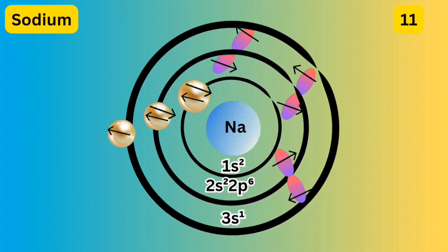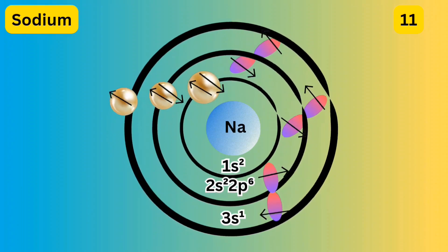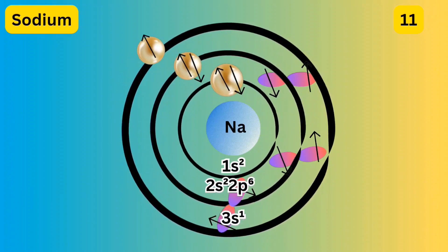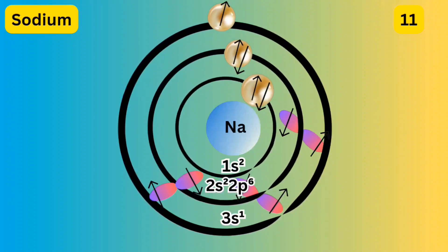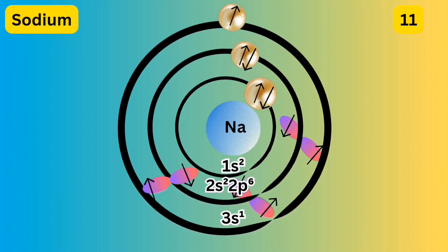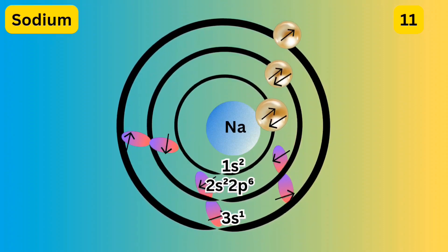There are 11 electrons in sodium. The first shell maximum is two electrons, and the second shell maximum is eight electrons, so the 11th electron goes to the 3s orbital. The electronic configuration of sodium is 1s2 2s2 2p6 3s1.